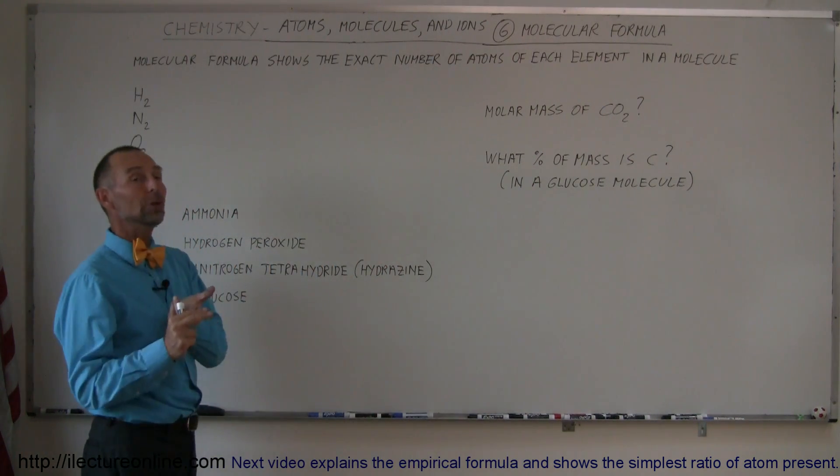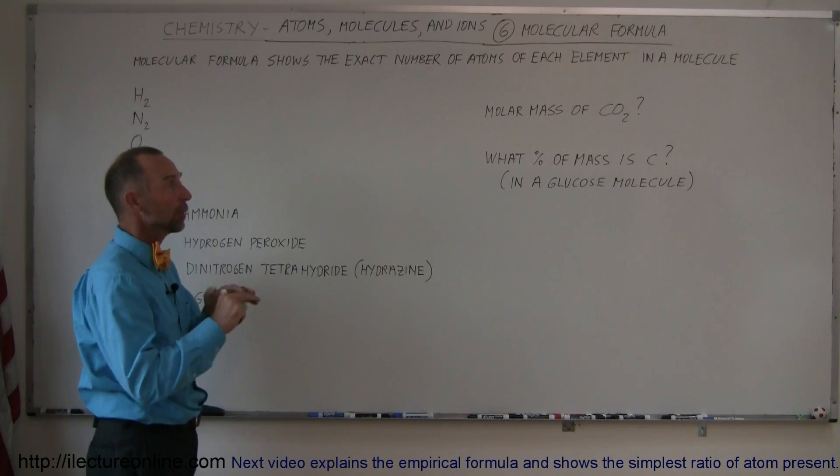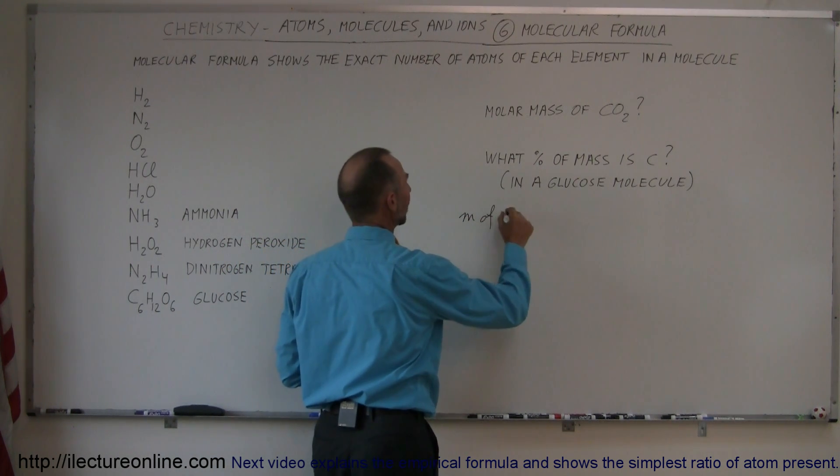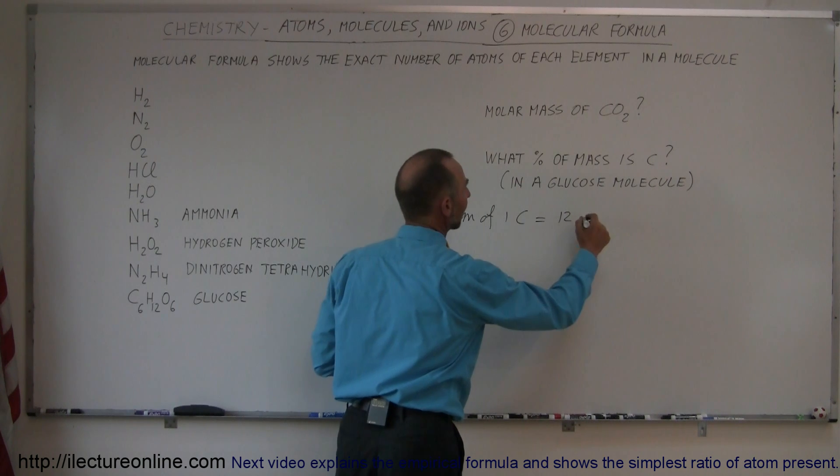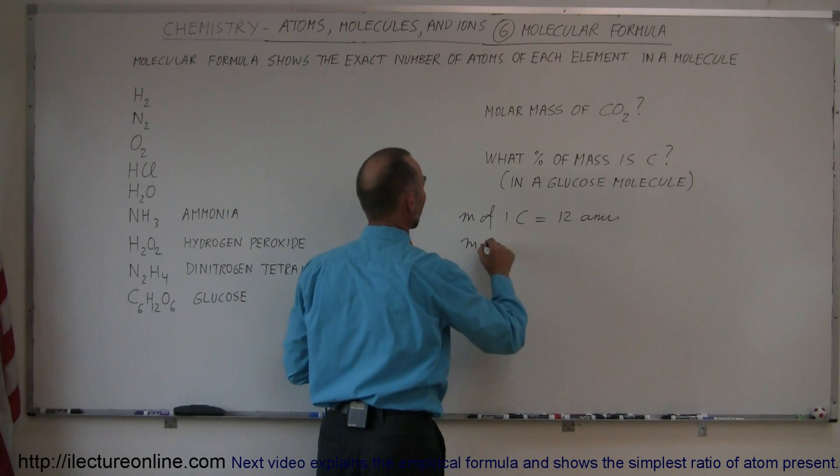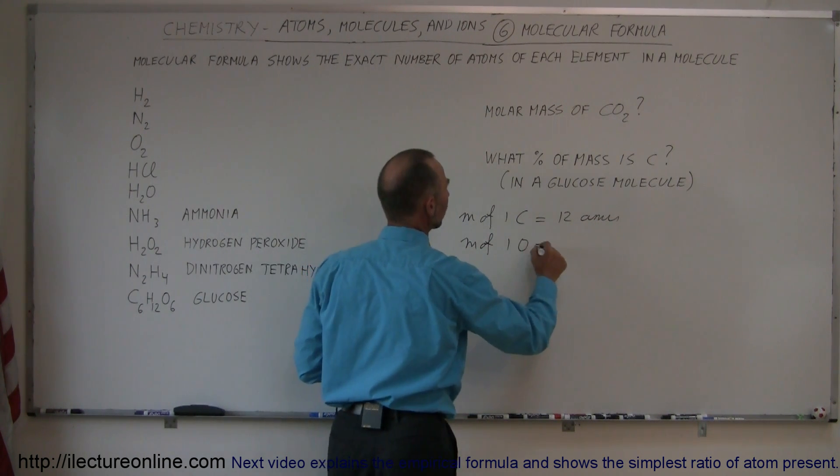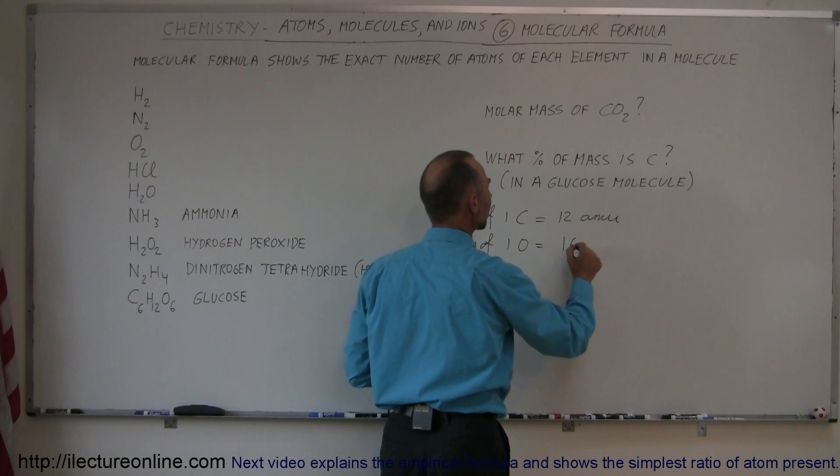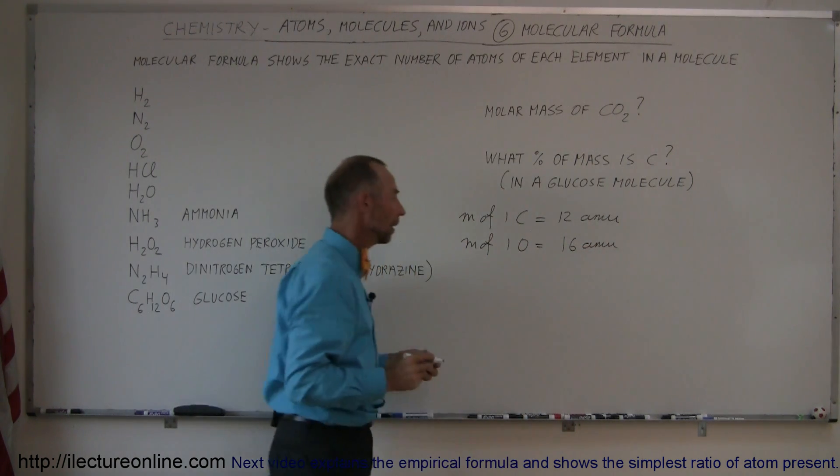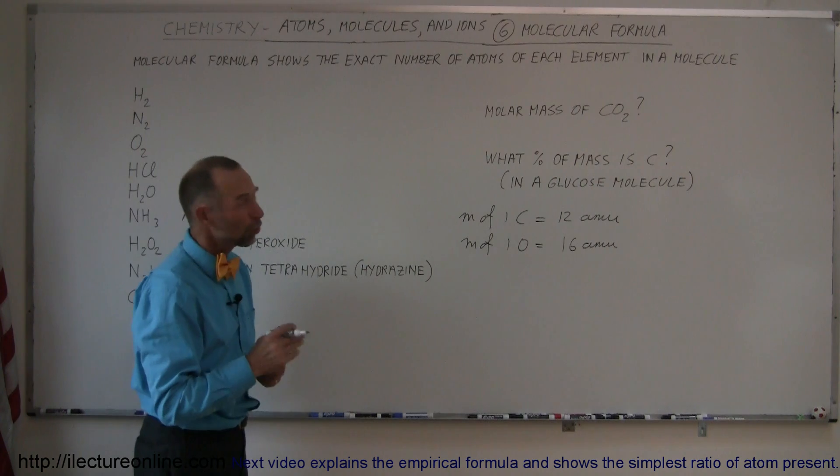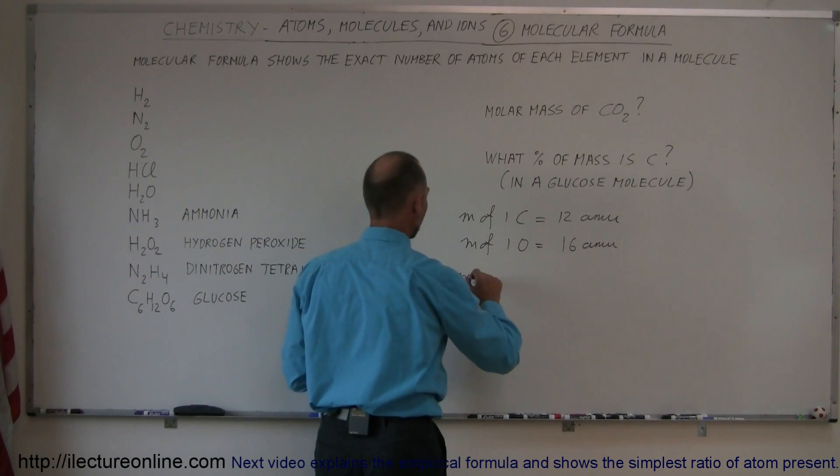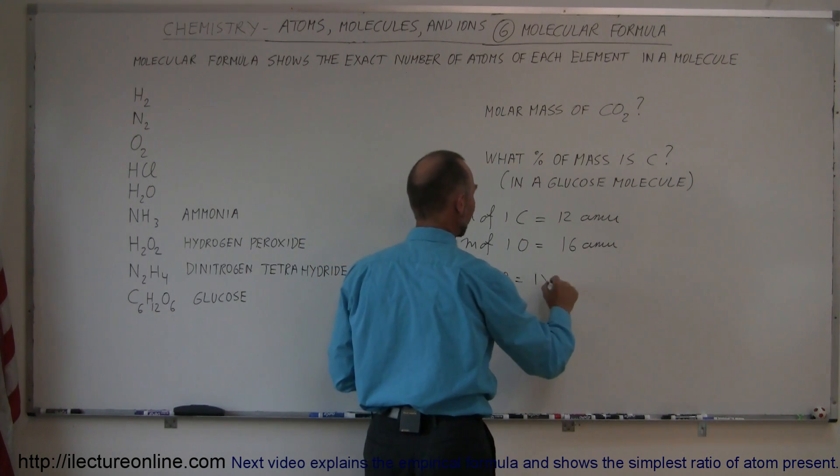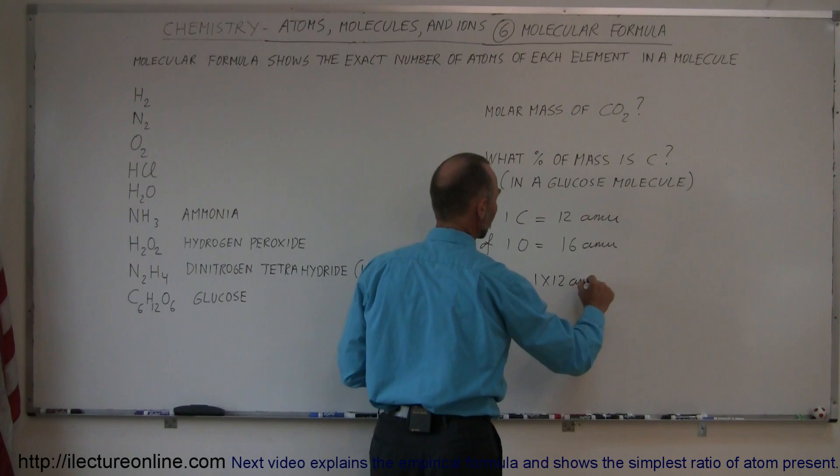So carbon dioxide has two atoms of oxygen and one atom of carbon in each molecule. Since the mass of one carbon is approximately equal to 12 atomic mass units, and the mass of one oxygen is about, well actually this would be exactly 12 AMUs, and for oxygen it's approximately 16 AMUs per atom. Since there's two of them, we have to double that. So the mass of carbon dioxide is equal to the mass of one carbon, so it's one times 12 AMUs, because there's one carbon.